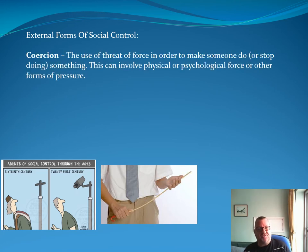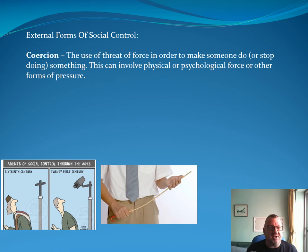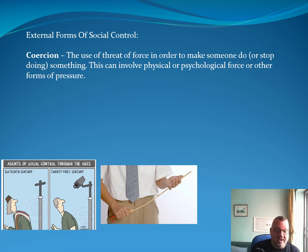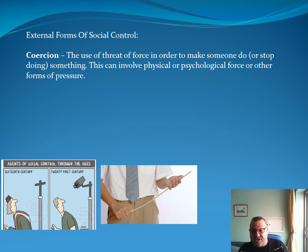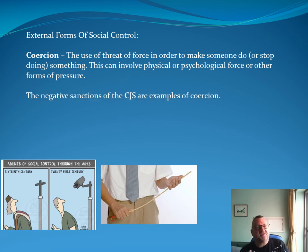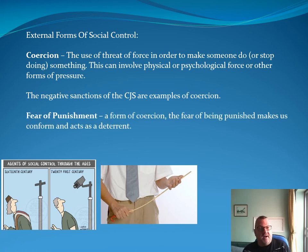You need to be familiar with the phrase coercion — the use of threat or force in order to make someone do or stop doing something. This can involve physical or psychological force or other forms of pressure. An example is the cane when I was at school. You've also got CCTV. In the 16th century, the idea that God was watching you kept people in line because more people had a religious belief — now the police watch you through CCTV cameras. Fear of punishment is a form of coercion; the fear of being punished makes us conform and acts as a deterrent.